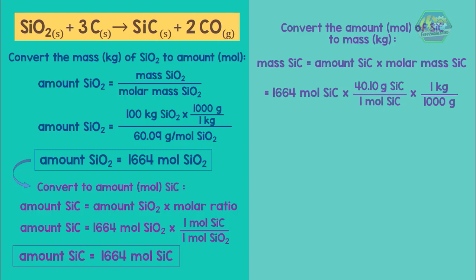So theoretically, the mass (kilogram) of silicon carbide produced is 66.73 kilogram silicon carbide. Now calculating the percent yield.